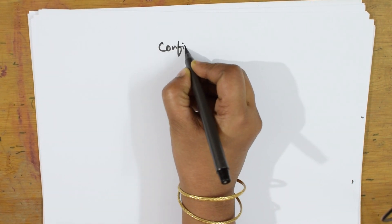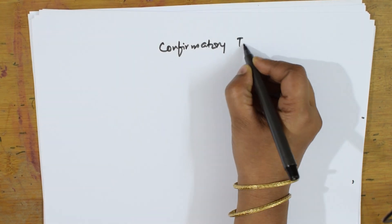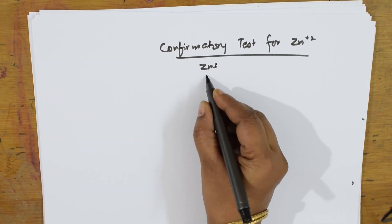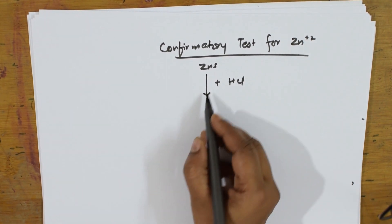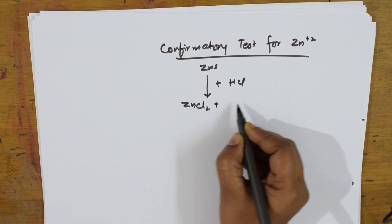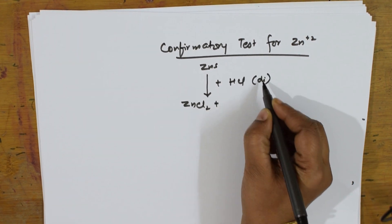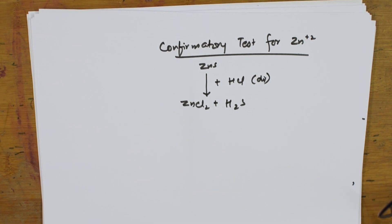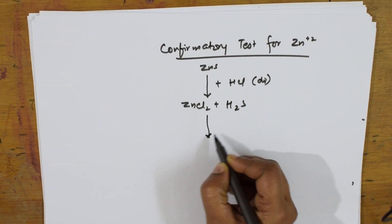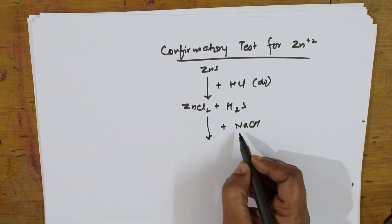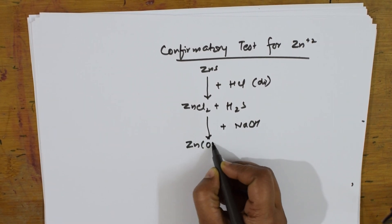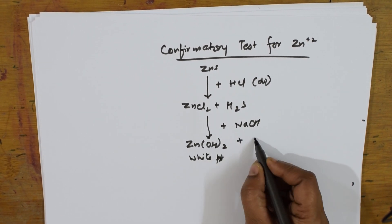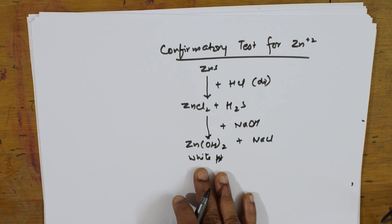Confirmatory test for zinc: take zinc sulphide and add dilute HCl to get zinc chloride and H2S. Then add sodium hydroxide to zinc chloride — zinc combines with sodium hydroxide to form zinc hydroxide, which is a white precipitate, along with NaCl. This white precipitate confirms the presence of zinc.